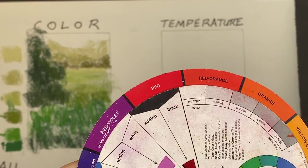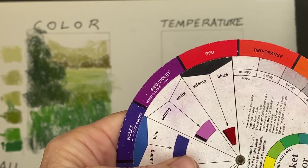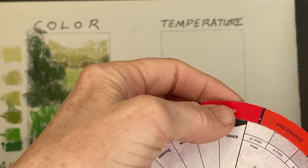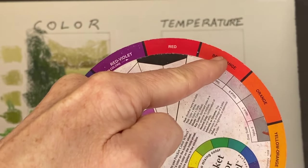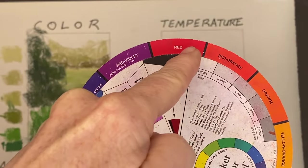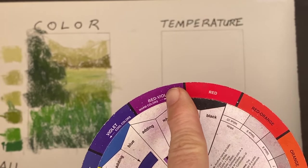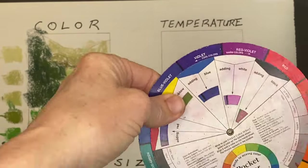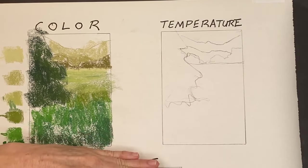Red is one that's sometimes hard for people. If you look at red and go one way it gets warmer reds; go the other way and it gets cooler reds. Just think of the direction of where things fall on the color wheel. Temperature is going to get cooler in the distance.